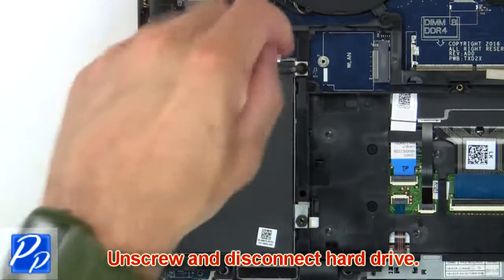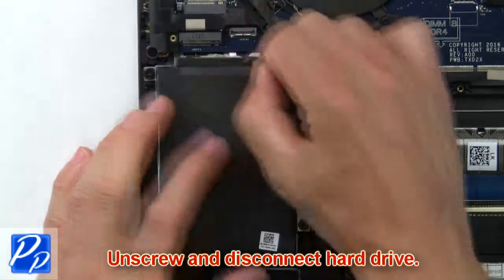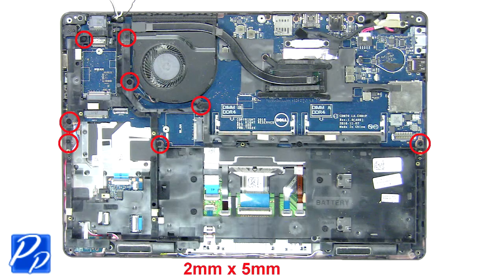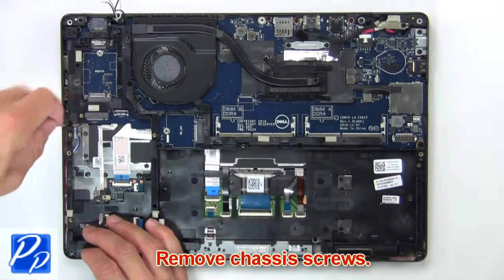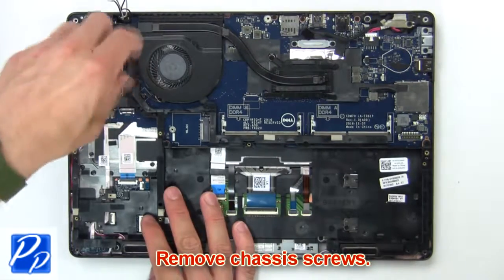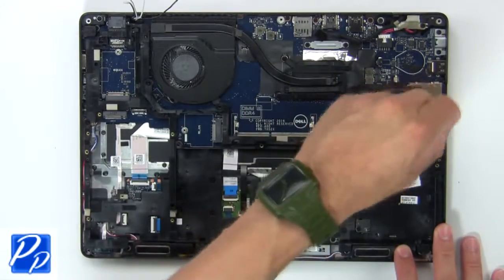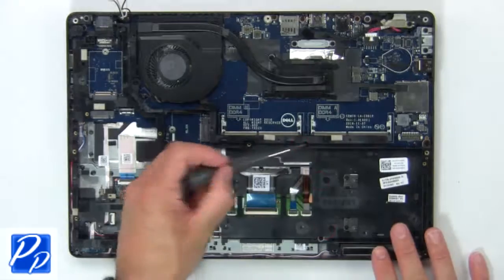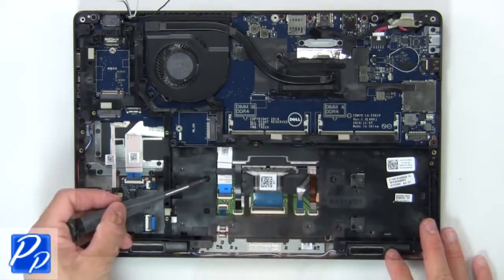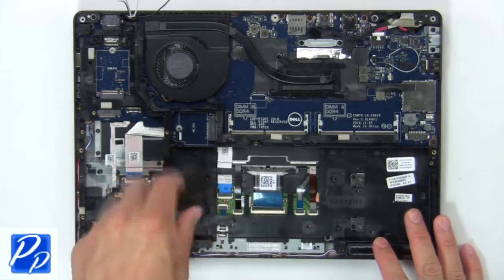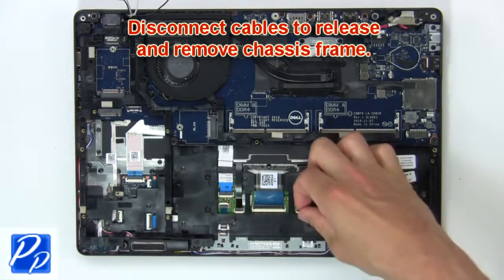Then unscrew and disconnect hard drive. Then remove chassis screws. Next disconnect cables to release and remove chassis frame.